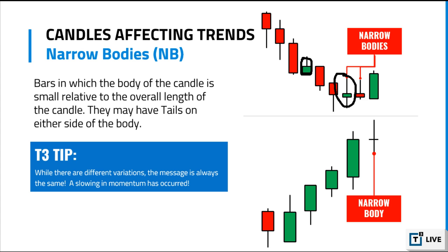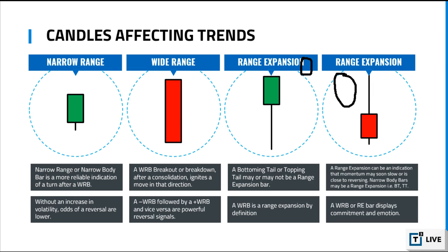Without an increase in volatility, odds of a reversal from a narrow range bar are slim to none. A narrow range bar essentially means low volatility, so unless you have an increase in volatility and the U-turn, that narrow range bar or narrow body is meaningless — it just means slowing in momentum.